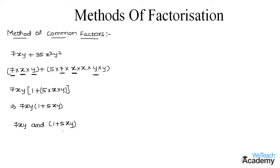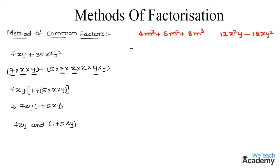Now let me explain this concept with the help of a few more examples. We are given two algebraic expressions to solve using the method of common factors. The first expression is 4m² + 6m² + 8m³. We can write 4m² as 2 × 2 × m × m, and 6m² as 2 × 3 × m × m.